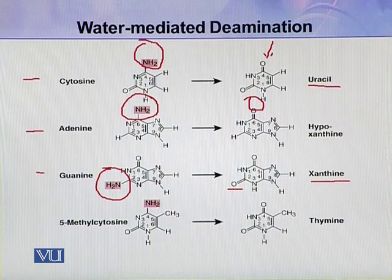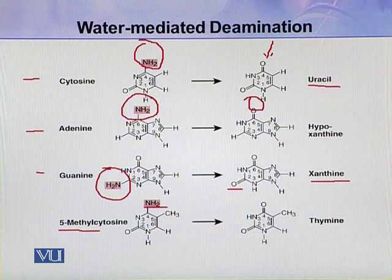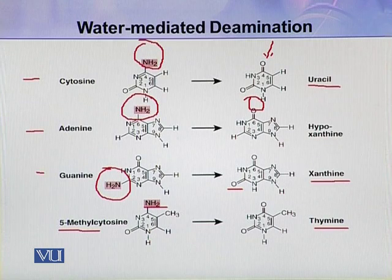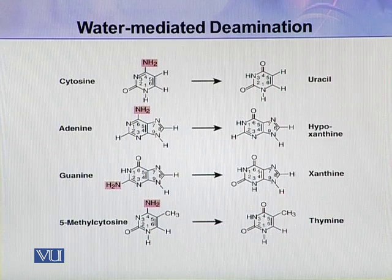Similarly, 5-methylcytosine, which is already a modified base, also contains an amino group, and after deamination of this 5-methylcytosine, thymine is produced. In this way, these deamination reactions convert different bases into modified bases.